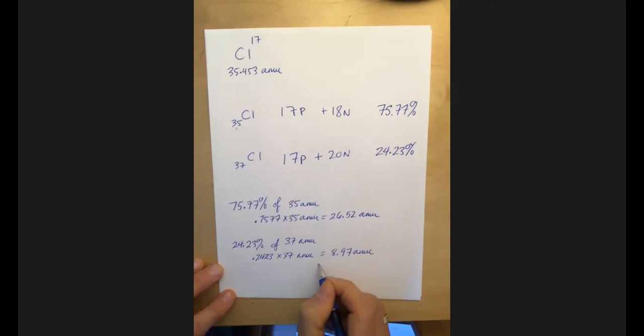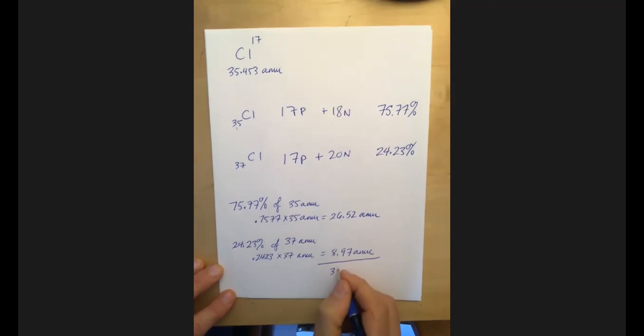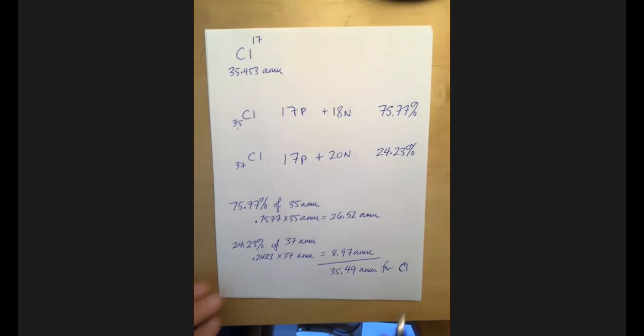And I could say 0.2423 times 37 AMUs equals 8.97 AMUs. So, and if I add those two together, I get 35.49 AMUs for chlorine. Which again, really nice and close to the value that's on the periodic table, 35.453, 35.49.